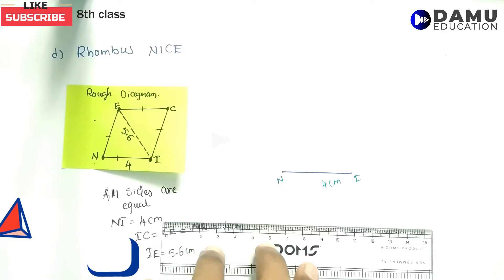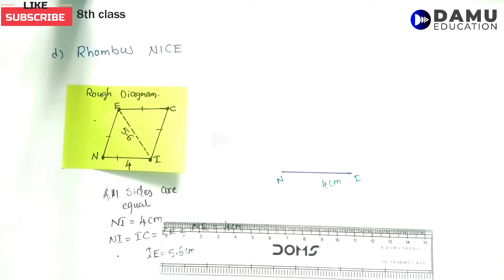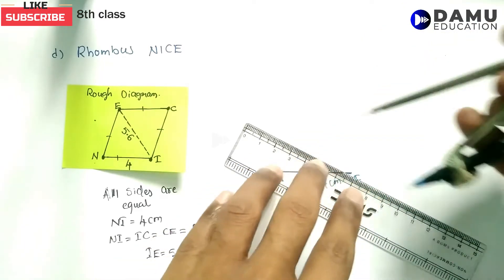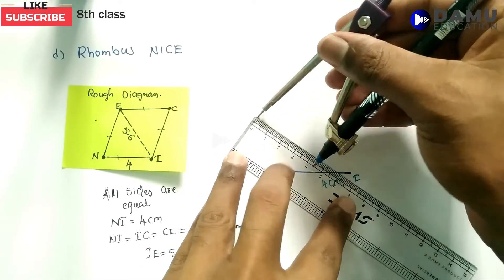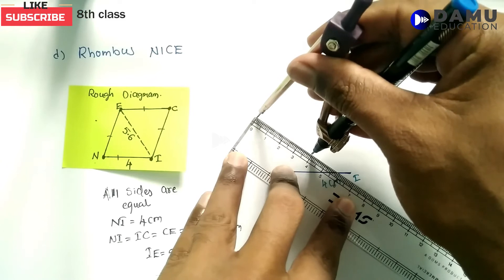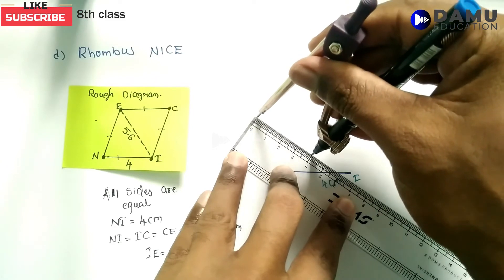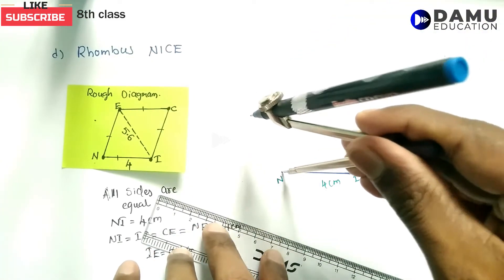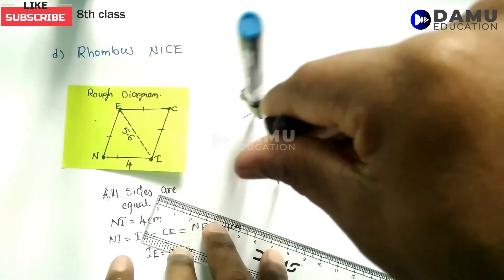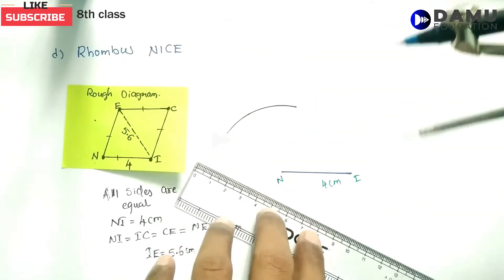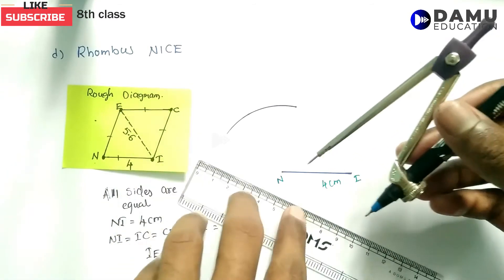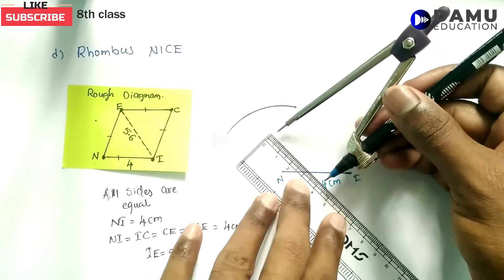Now let's take your compass and draw 4 centimetres from N. From 0 to 4. From N we need to draw one arc. From I also we need to draw one more arc, that is 5.6 centimetres.